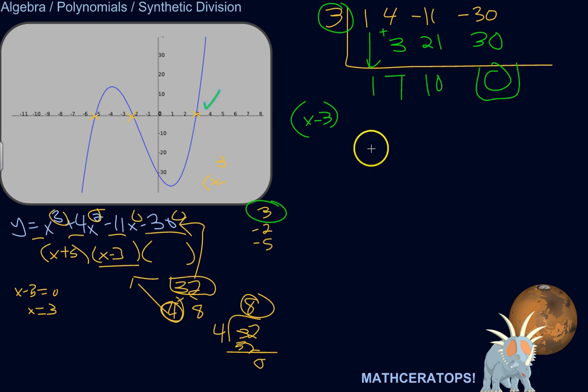So let's check the other two just to practice synthetic division. We want to check the root negative 2. Let's put our coefficients. Bring down the first one. 1 times negative 2 is negative 2. Add. 4 minus 2 is 2. 2 times negative 2 is negative 4. Add. Negative 11 plus negative 4 is negative 15. Negative 15 times negative 2 is positive 30. Negative 30 plus 30 is 0.